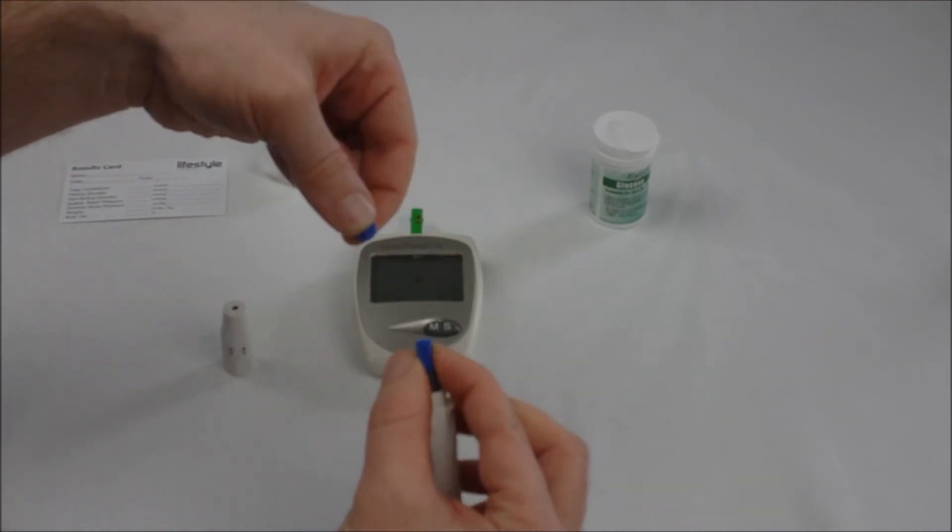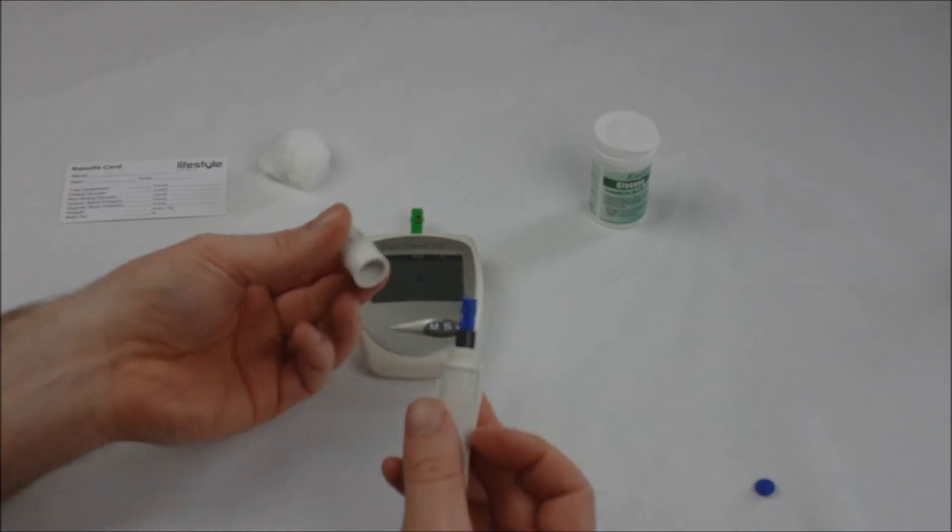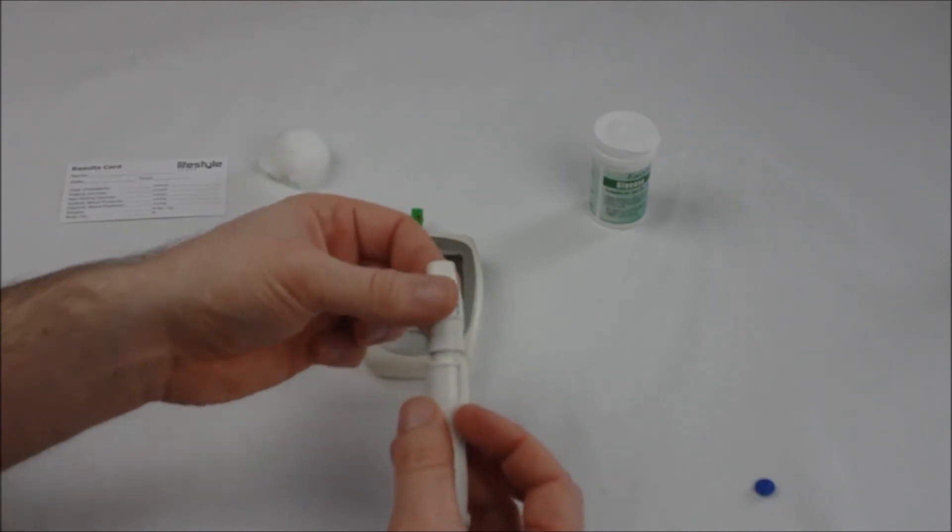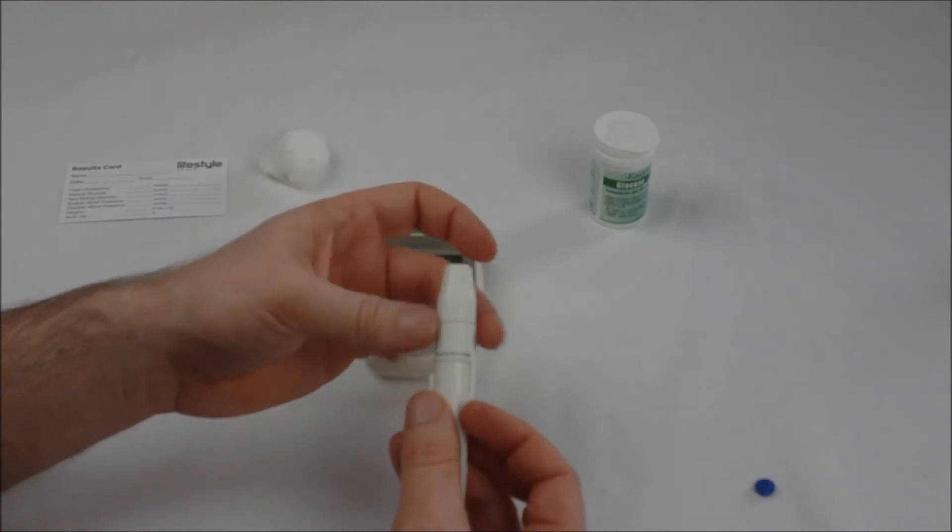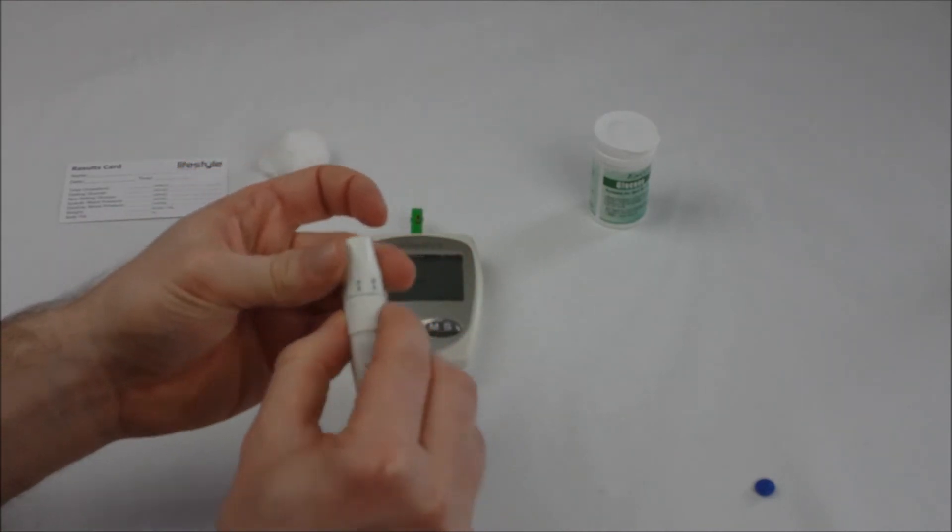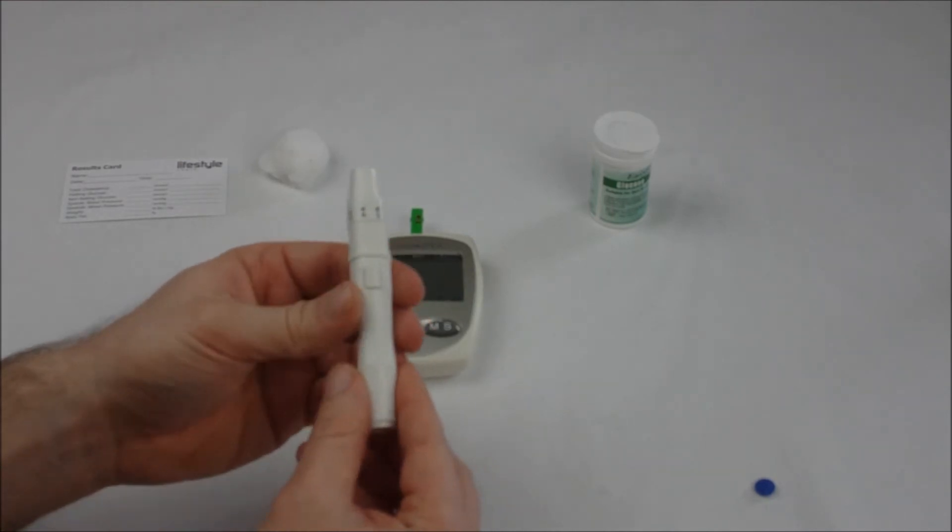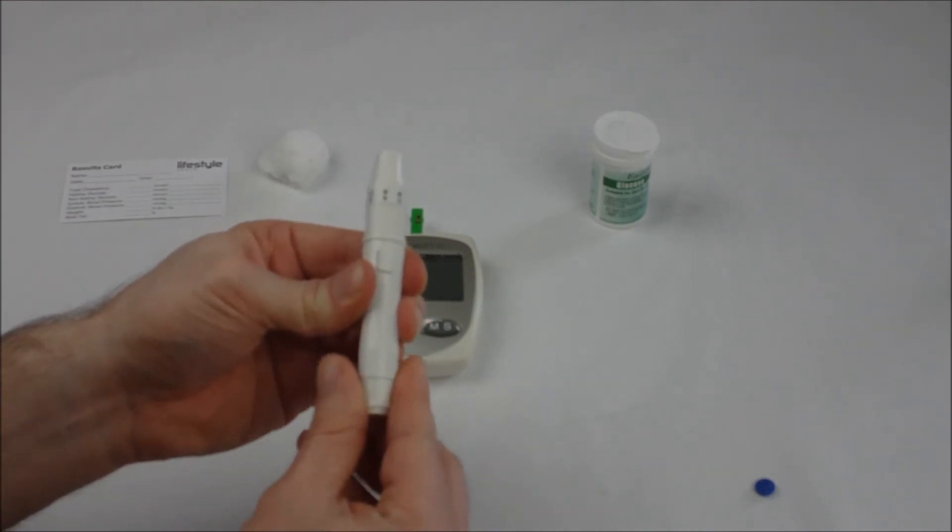Twist the circular cap off, exposing the needle, so take care at this point. Then re-screw the top of the lancing pen back on, select the depth setting that's appropriate to your skin, and engage the pen by pulling back.